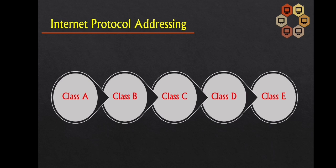In Class C, an IP address is assigned to only small size networks. The network ID is 24 bits long while the host ID is 8 bits long.